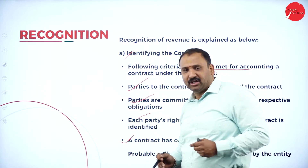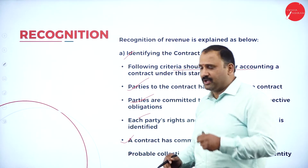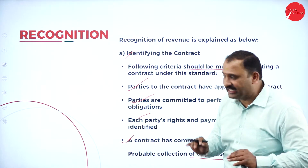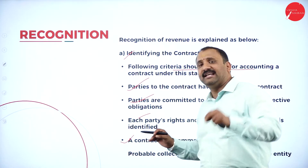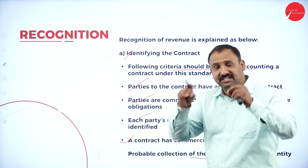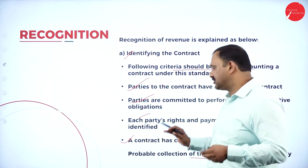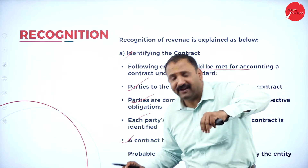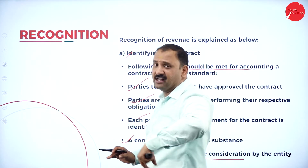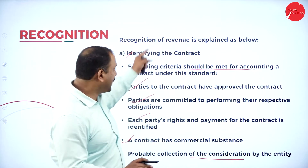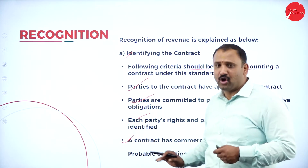First, let's identify the contract. Has the contract been identified between the concerned person - the client and the customer? The criteria to be met: parties to the contract have approved the contract - yes, accepted. Parties are committed to performing their respective obligations - also accepted. Each party's rights and payments - whatever the rights and payment of the contract is identifiable. Next, the contract has commercial substance - there should be a meaning, an offer and acceptance. Why this has to be done and at what pace - there must be a clear understanding.